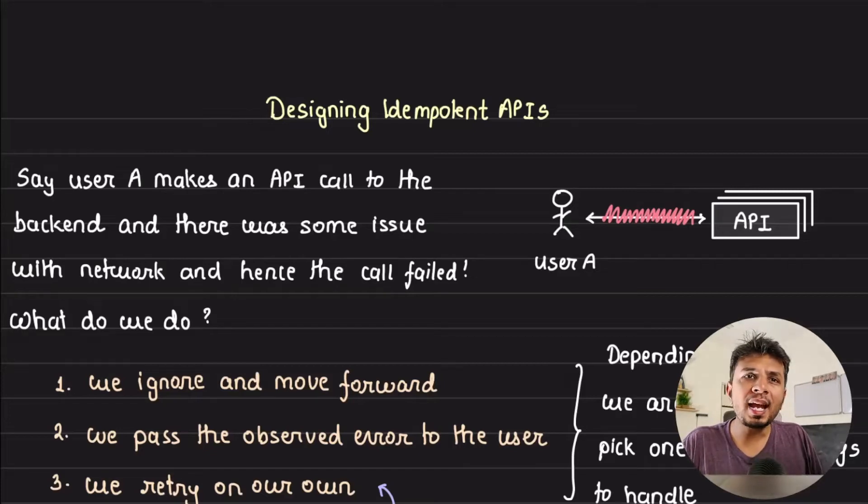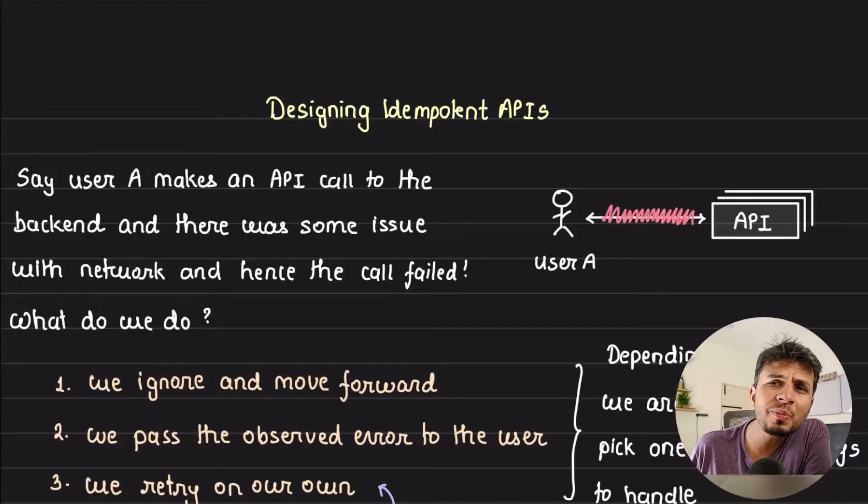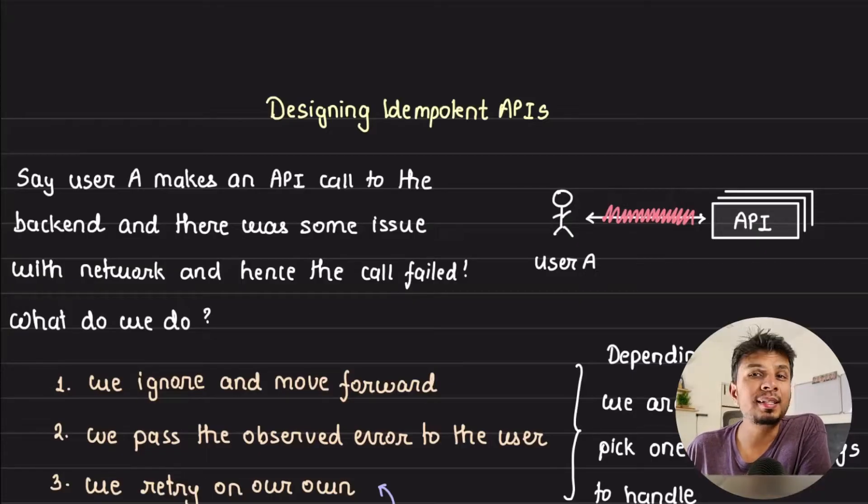Say you are writing a payment service and you wrote an API that transfers money from one account to another, but because of a network glitch the client automatically retried the API call and this led to the deduction of money twice. To handle this situation we need our APIs to be idempotent, and in this video we take a look at what idempotent APIs are, how to write them, and how they form the heart and crux of any payment service.